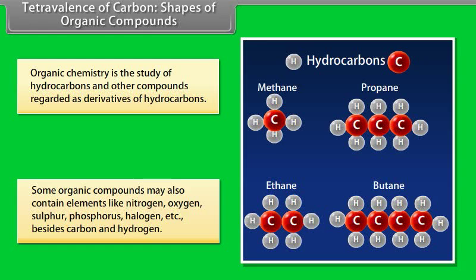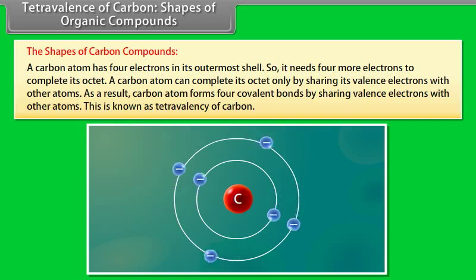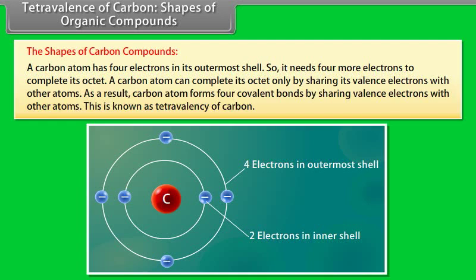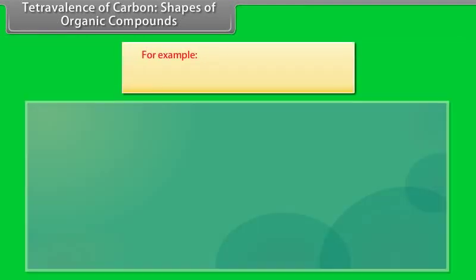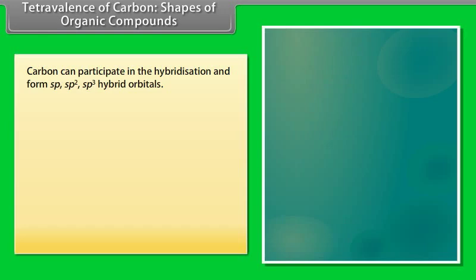A carbon atom has 4 electrons in its outermost shell, so it needs 4 more electrons to complete its octet. A carbon atom can complete its octet only by sharing its valence electrons with other atoms. As a result, carbon atom forms 4 covalent bonds by sharing valence electrons with other atoms. This is known as tetravalency of carbon. For example, methane and ethane.